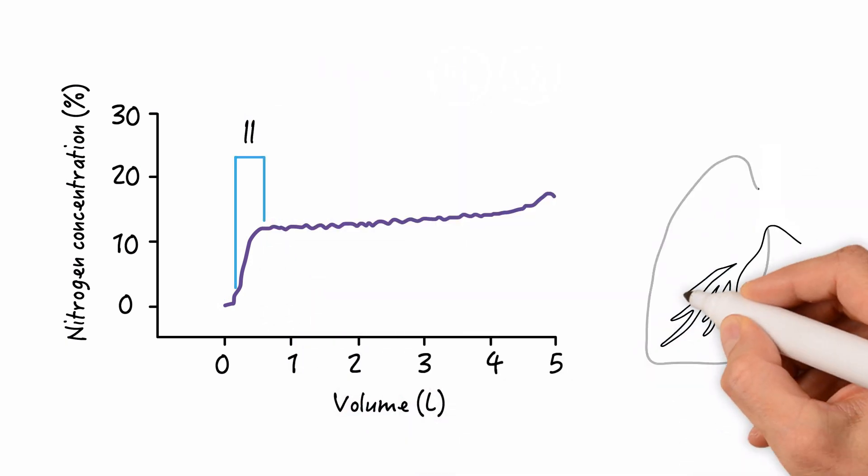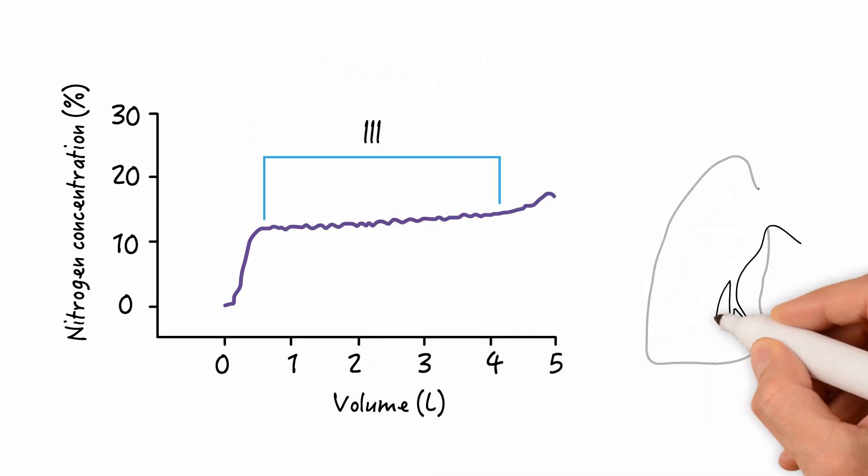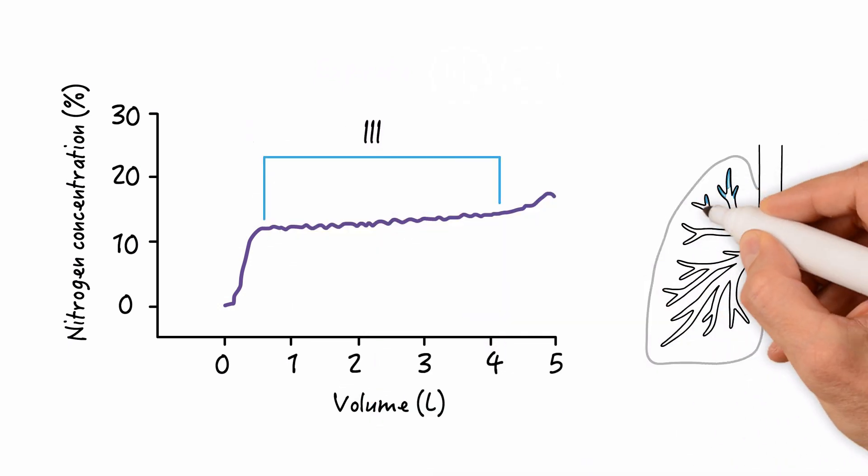Phase 2 constitutes a mixture of gas from the central airways and the alveoli. Phase 3 is defined by a mixture of gases from the lung apices, mid-lung zones, and lung bases.